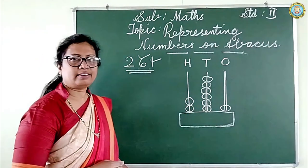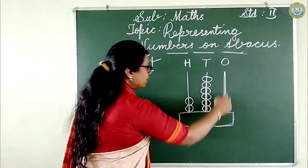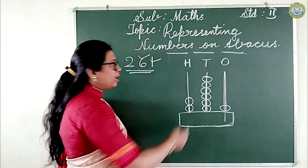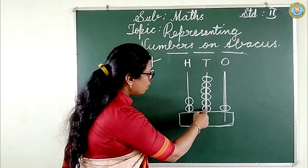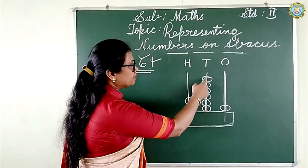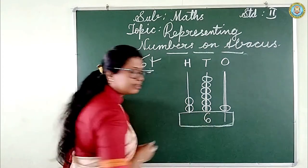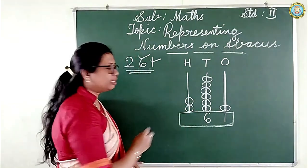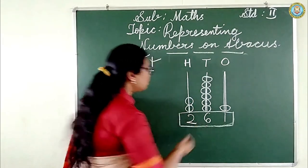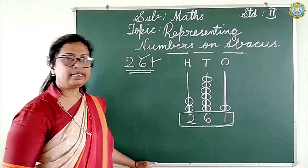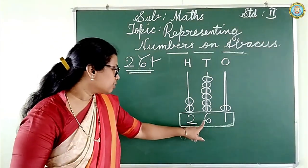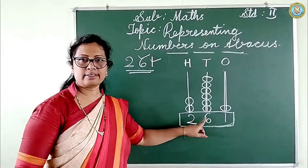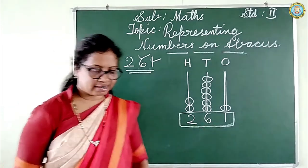Below the abacus write the digits. In ones there is one bead — write one. In tens there are six beads — write six. In hundreds there are two beads — write two. How to read this number? Two hundreds, sixty one: two hundred and sixty one.